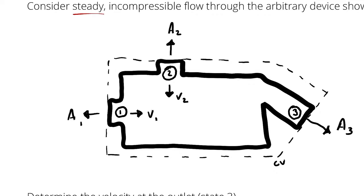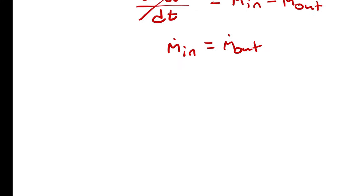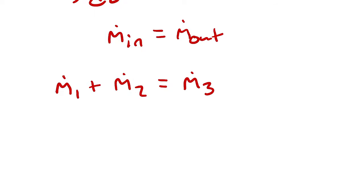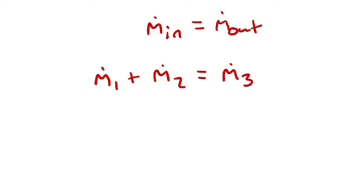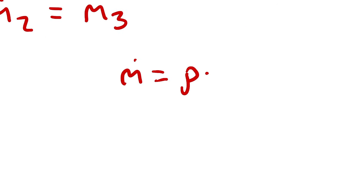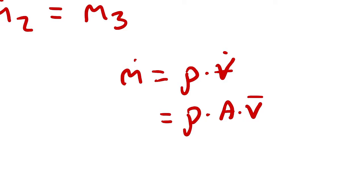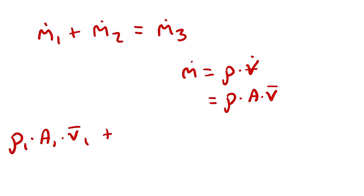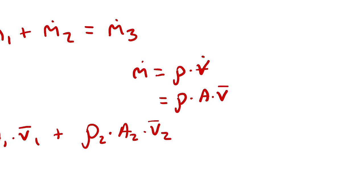I have two state points with entering mass at states 1 and 2, and one state point with exiting mass, so: ṁ₁ + ṁ₂ = ṁ₃. How do I write mass flow rate in terms of known quantities? We traditionally write it as density times volumetric flow rate, and volumetric flow rate is cross-sectional area times average velocity. So ṁ₁ = ρ₁A₁V̄₁, ṁ₂ = ρ₂A₂V̄₂, and ṁ₃ = ρ₃A₃V̄₃.